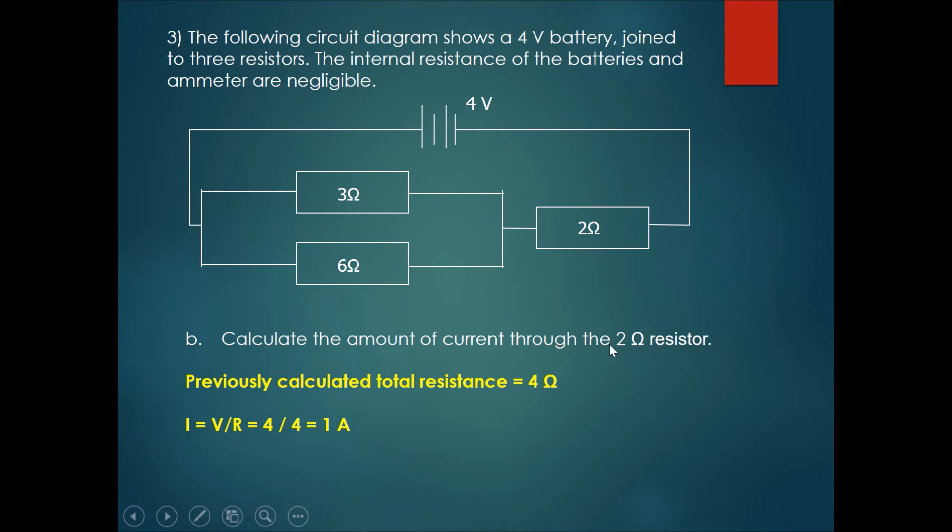Next one, calculating the amount of current through the 2 ohm resistor. The 2 ohm resistor is on the main line which is the current coming out from the battery. And the current coming out from the battery is calculated by the potential difference across the battery divided by the total resistance.